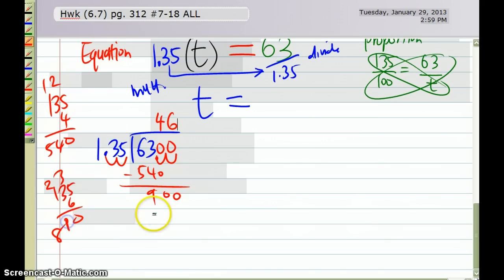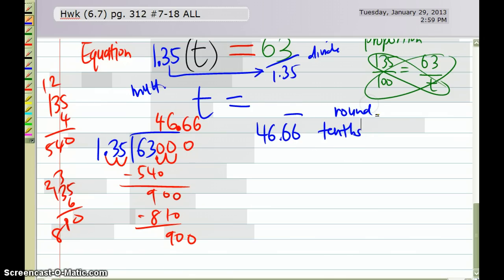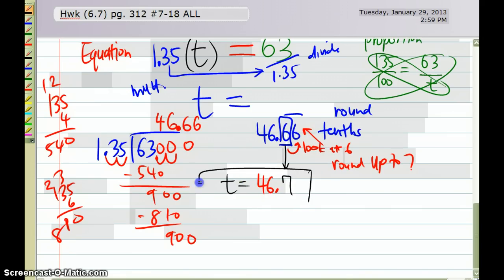So again, I'm getting another 6 and a 6, and I'm repeating that 46.66, which actually means if I'm to round to the tenth, because that's what the book tells me I'm going to do, I'm going to round this number. So I'm going to look on the right, I look at the 6, and the 6 is going to tell me to round up to 7. So I'm going to get 46 points, and then this 6 changes to a 7. So there would be my final answer for t.